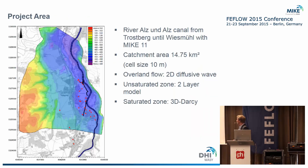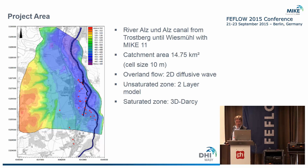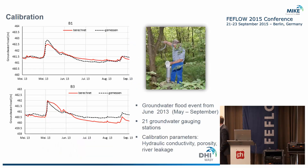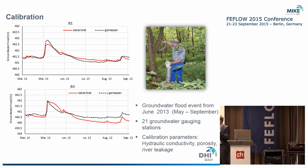This is the project area. It has a catchment area of around 15 square kilometers. Here you can see the river running — this is the River Ilse — and also the gauging stations. Calibration was carried out at 21 gauging stations, and we calibrated the model for the flood event in early summer 2013, as this was the only flood event available for calibration.